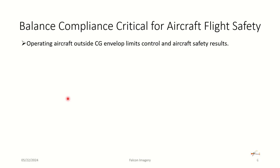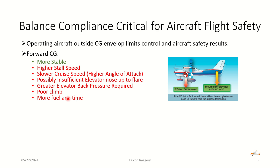Operating an aircraft outside the CG envelope limits will affect aircraft safety. If we find our CG is forward of the limits, there are a lot of negatives highlighted in red and one relatively positive thing. The positive is the aircraft is more stable and, in the event of a stall, it's more easily able to recover. But the negatives of a forward CG include a higher stall speed, slower cruise speed with a higher angle of attack, possibly insufficient elevator nose-up to flare for landing, greater elevator back pressure required for flaring or climbing out, poor climb performance, and more fuel consumption en route.